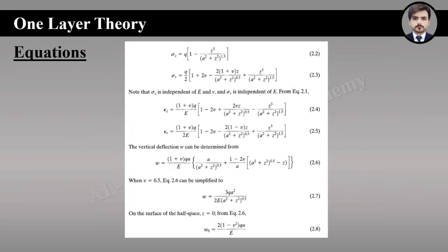These equations are used to find stress, strain, and deflection, given in the second chapter of the book. Equation 2.2 is used to find the vertical stress at any depth. Equation 2.3 is used to find the radial stress at any depth, and the same equation 2.3 is also used to find the tangential stress at any depth. Note that σ_z is independent of E and Poisson ratio, and σ_r is independent of E.